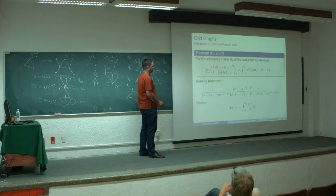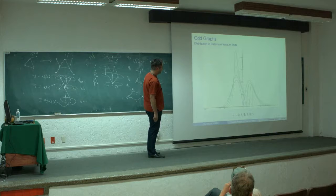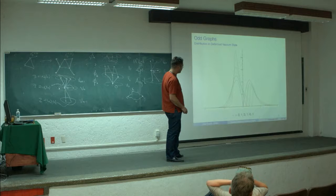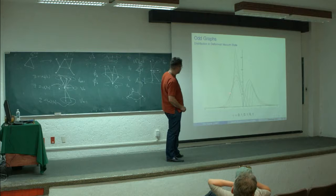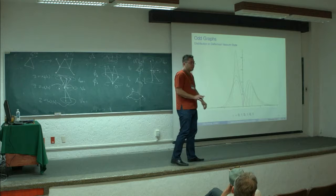We obtain the distribution with respect to the deformed vacuum state, given by a measure with a density function shown here. When gamma equals 0, we recover the two-sided Rayleigh distribution, which is the special case corresponding to the vacuum state. Thank you.